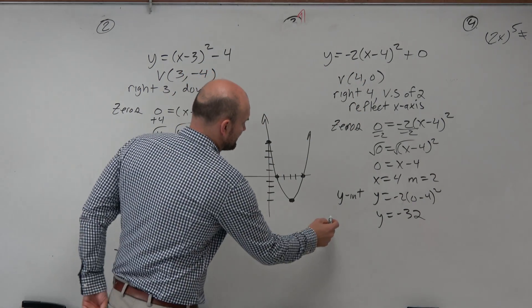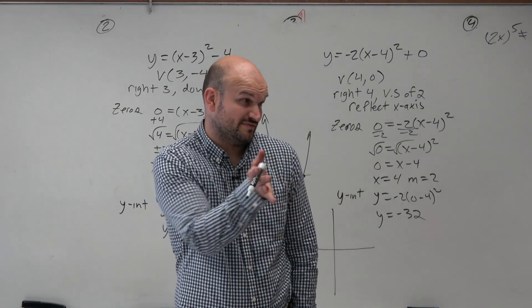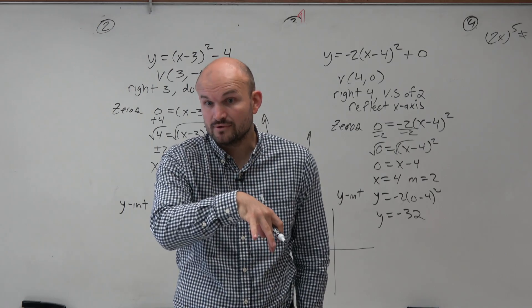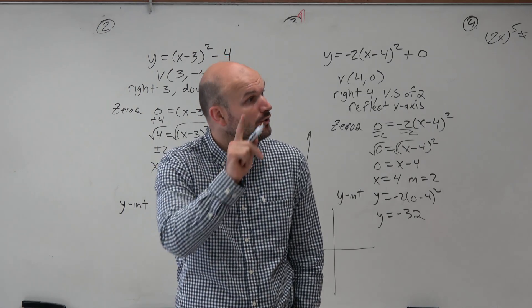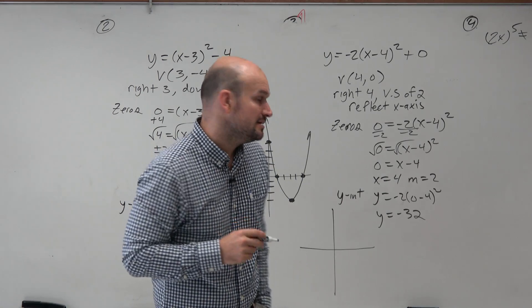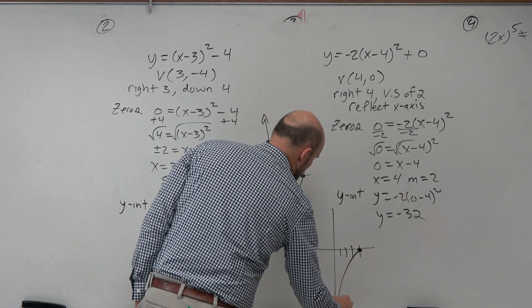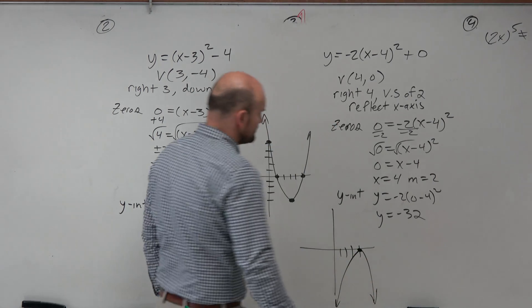Now let's just graph this. So do we already know what this graph should look like? It's shifted 4 units to the right. It's opening down. Or you should also know it has a 0 at 4 with the multiplicity of 2, so it's going to bounce. That's what the graph looks like.